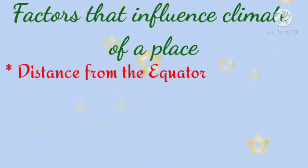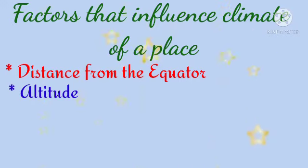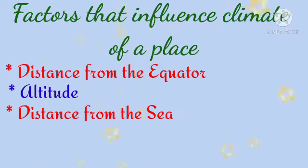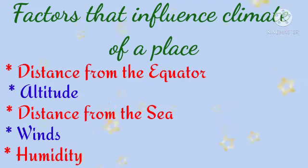Factors that influence the climate of a place: distance from the equator, altitude, distance from the sea, winds and humidity.